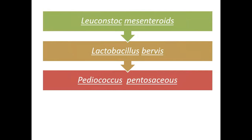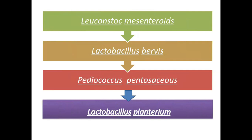From this table it is clear that Leuconostoc mesenteroides starts growing first at the desired salt concentration and takes the acidity to 1 percent, after which its growth slows down. Lactobacillus brevis then increases growth to take acidity to 1.5 percent, followed by Pediococcus pentosaceus reaching 1.8 percent, and finally Lactobacillus plantarum bringing acidity to 2 percent.